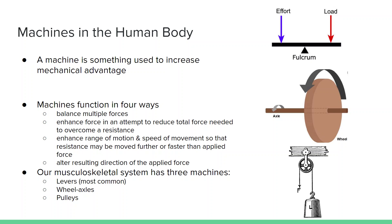Within our musculoskeletal system, we have three machines. We have levers, which we'll talk about in great detail, wheel axles, and pulleys. Examples of levers are our joints. In any joint, we have a center of rotation. So the bones are the levers, and then the muscles are the load or the effort.